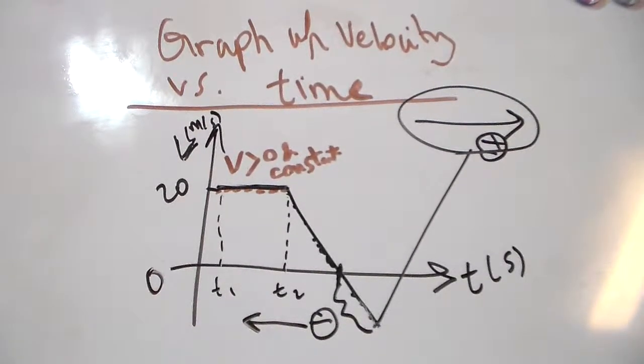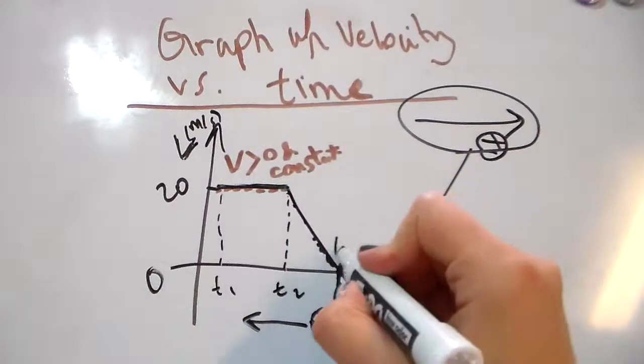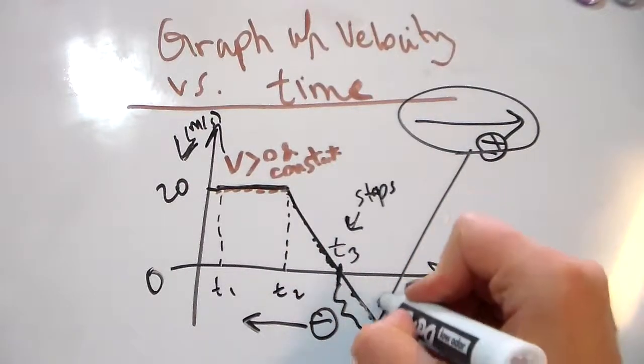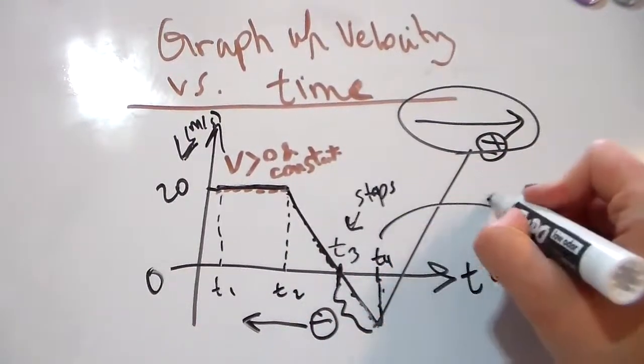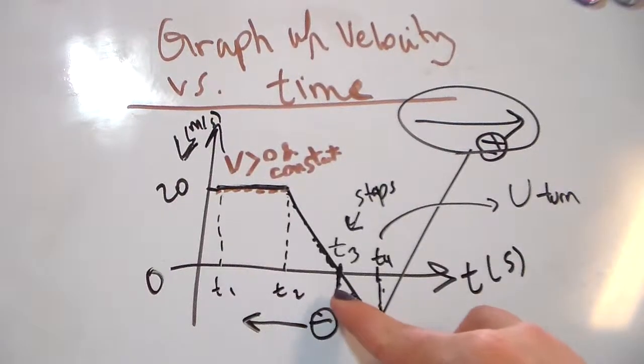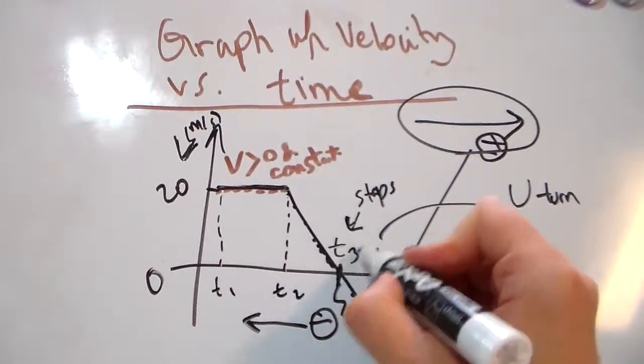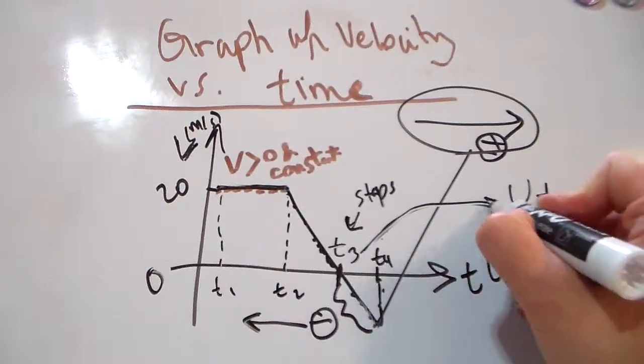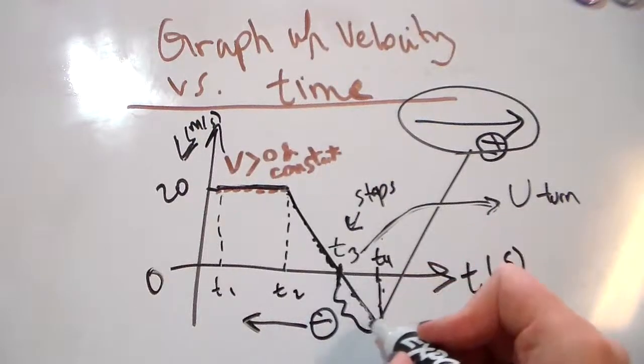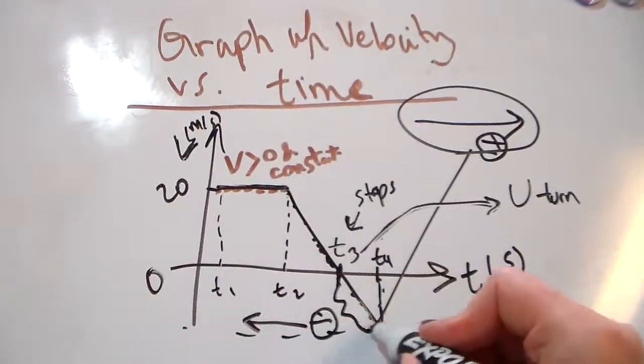We stop momentarily at T3, and then we make a U-turn. I apologize for the confusion - we stop and make a U-turn at T3, and then we keep going along I-10 west till we get to our highest velocity.